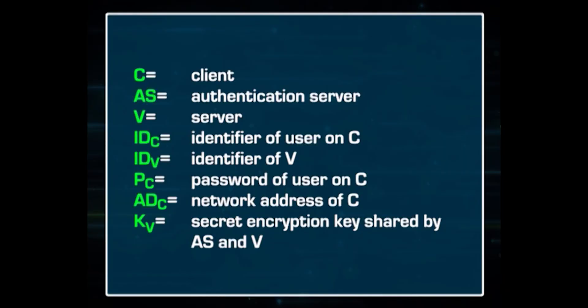We will follow a scenario-based approach using these notations: C stands for client; AS stands for authentication server; V stands for server; IDC is the identifier of the user on C; IDV is the identifier of V; PC is the password of the user on C; ADC is the network address of C; and KV is the secret encryption key shared by the authentication server and the server.